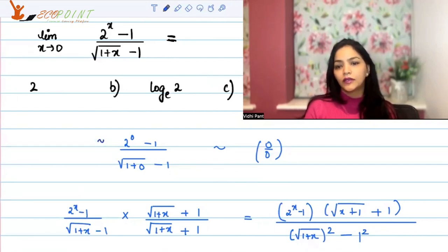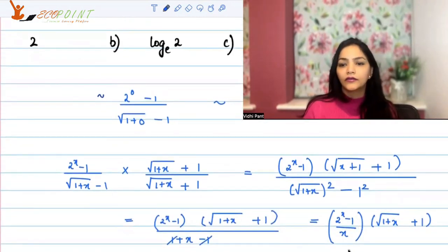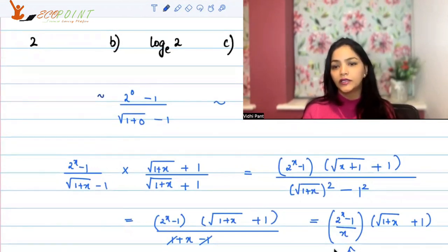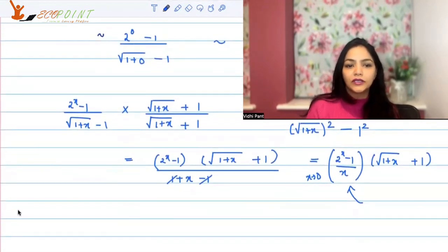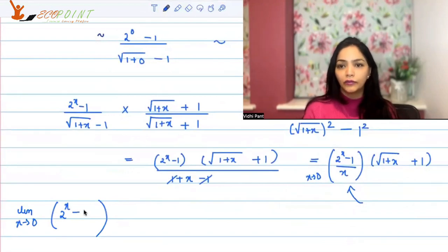Now what we are getting is (2 to the power x minus 1) upon x, multiplied by (square root of 1 plus x plus 1). I am writing it this way because we have already established in a previous question what the limit turns out to be as x tends to 0 of (a to the power x minus 1) upon x. Now put the limit — in limits you can always separate the limit of a product into the product of limits, because of the properties of limits.